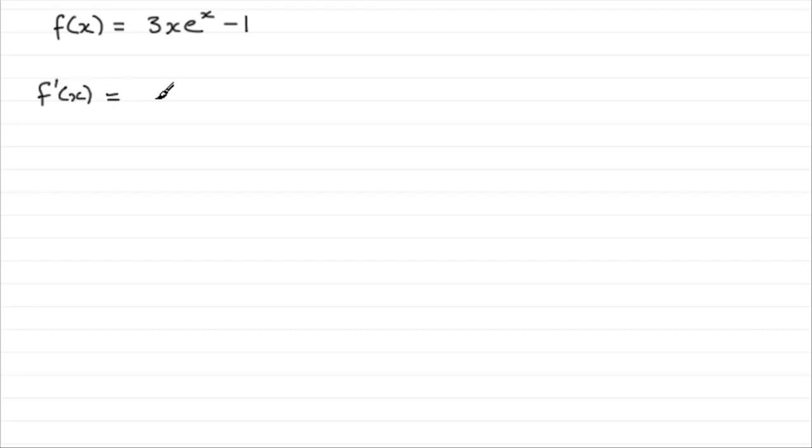To differentiate this with respect to x, when it comes to the first term, we've got essentially two functions of x being multiplied together, the 3x times the e to the power x. And to differentiate this, you need to be familiar with the product rule.